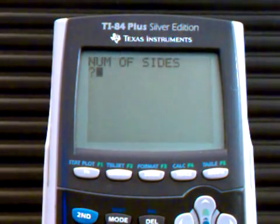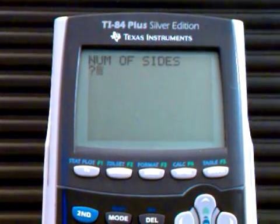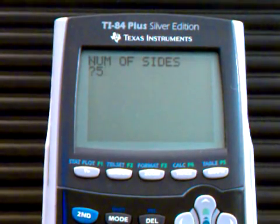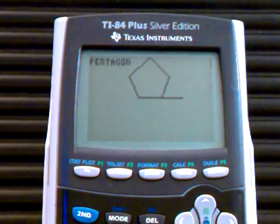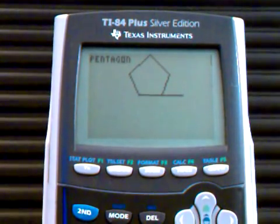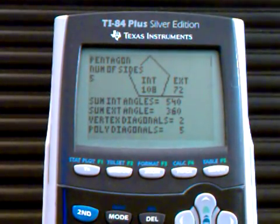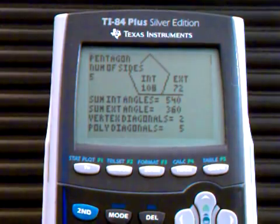We're going to start with number one, the number of sides. I'm going to put in five because I like five, and you can see it's a pentagon. And what it goes and does, it fills out the relevant information.